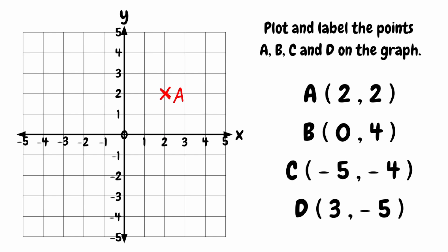Now for point B, we've got coordinates of 0, 4. Because we've got an x-coordinate of 0, that means we're starting at the origin. And then because we've got a y-coordinate of 4, we're going to move up by 4, so our point B would actually be here on the y-axis. Now looking at point C, we have coordinates negative 5, negative 4. Our x-coordinate would be negative 5, which is here. And then with a y-coordinate of negative 4, we need to come down by 4, which would be here, in line with negative 4 on the y-axis. And that would be our point for C.